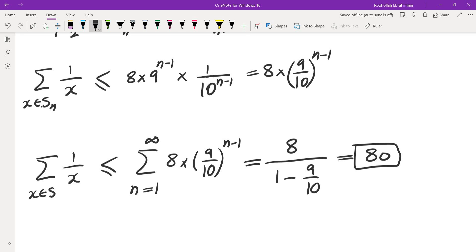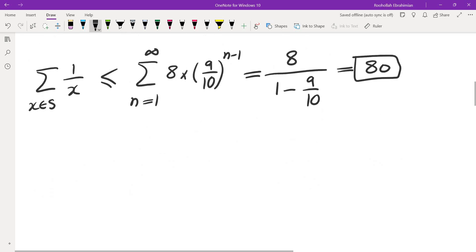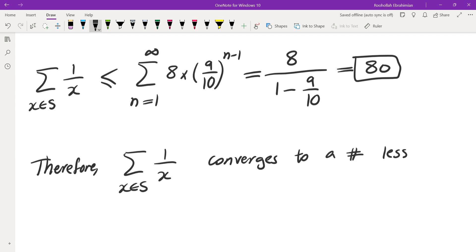So we just showed that the sum of the reciprocals is less than or equal to 80. Now note that all of these terms of this series, 1 over X, they are all positive, which means being bounded is the same as being convergent. So therefore the sum of 1 over X when X is in S converges, and in fact it converges to a number less than 80, and that is the end of our solution.